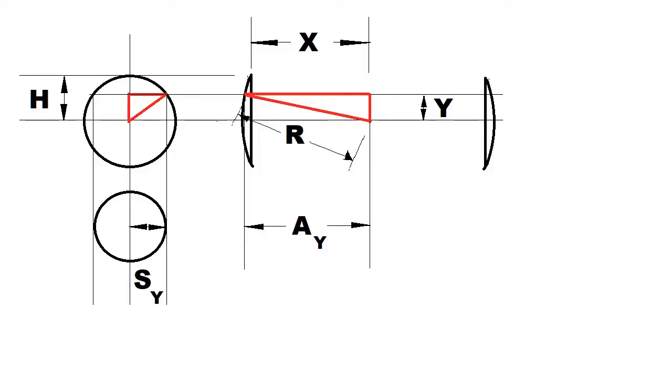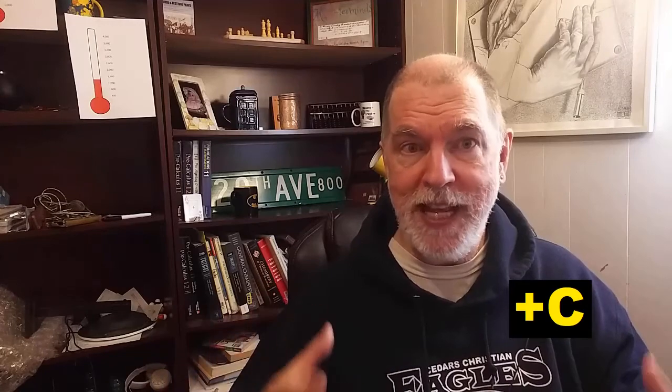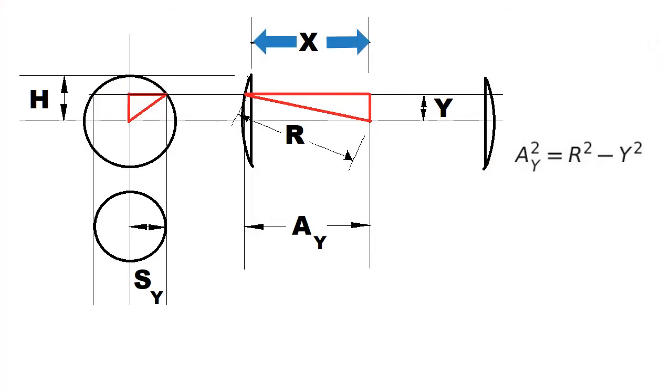What about an arbitrary cross section a distance y above the center line? Pythagoras again allows us to relate the outer radius of the annulus, which we'll call a, to R and y. The y subscript tells us we are looking at that particular value at position y. The inner radius of the annulus, the hole, doesn't change. The radius is X.